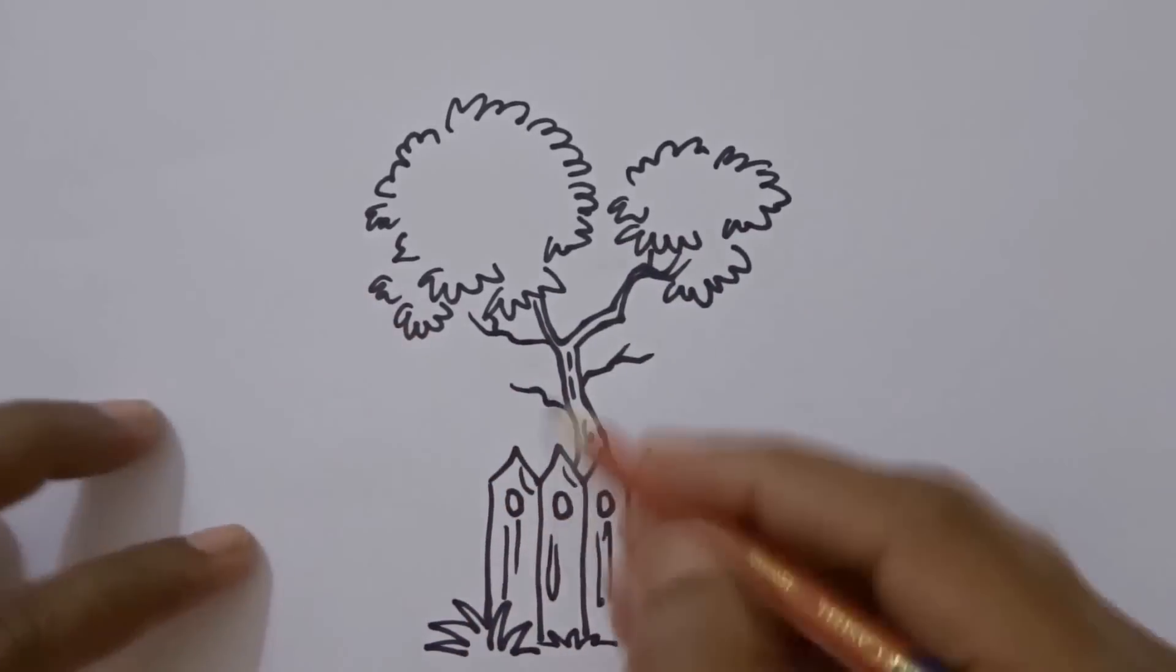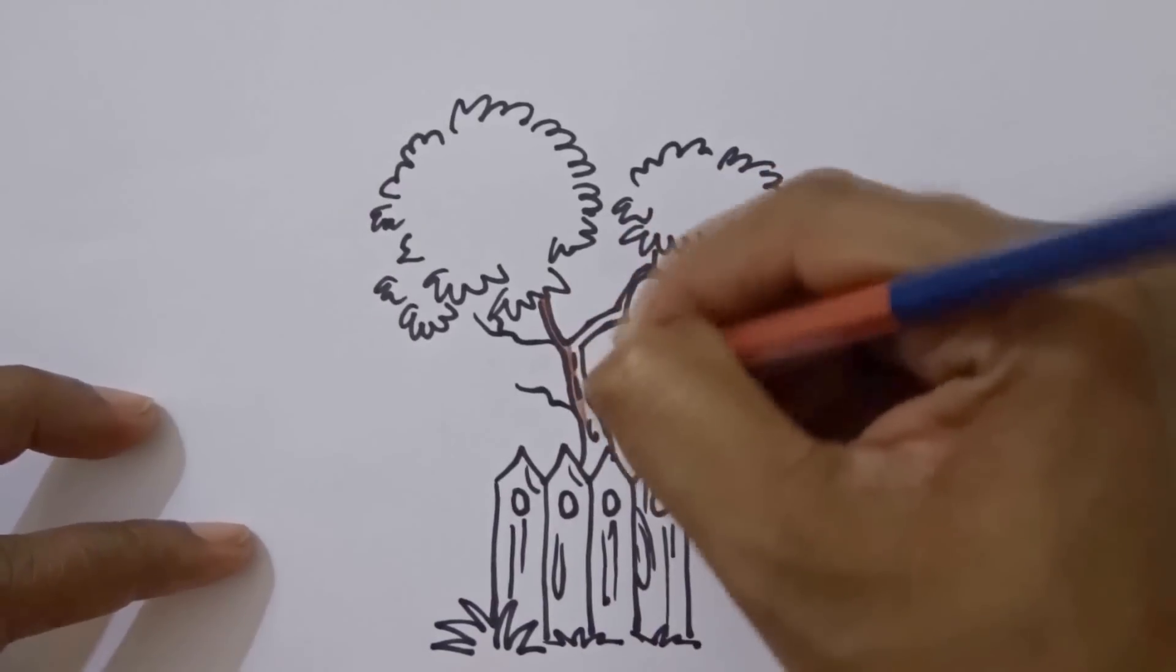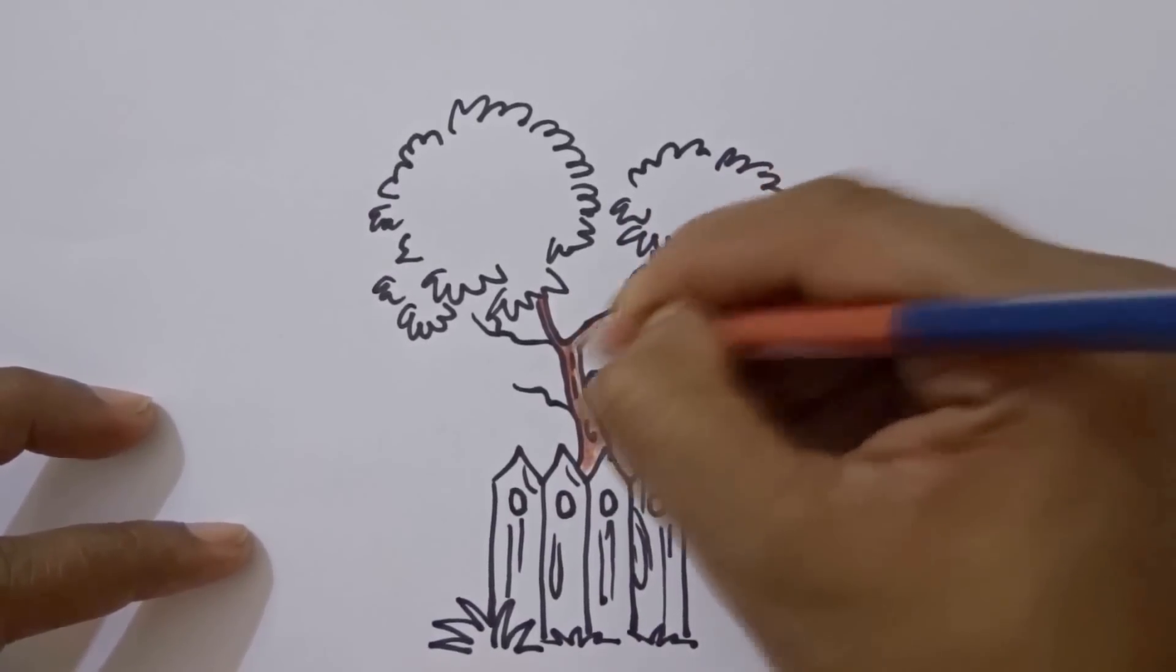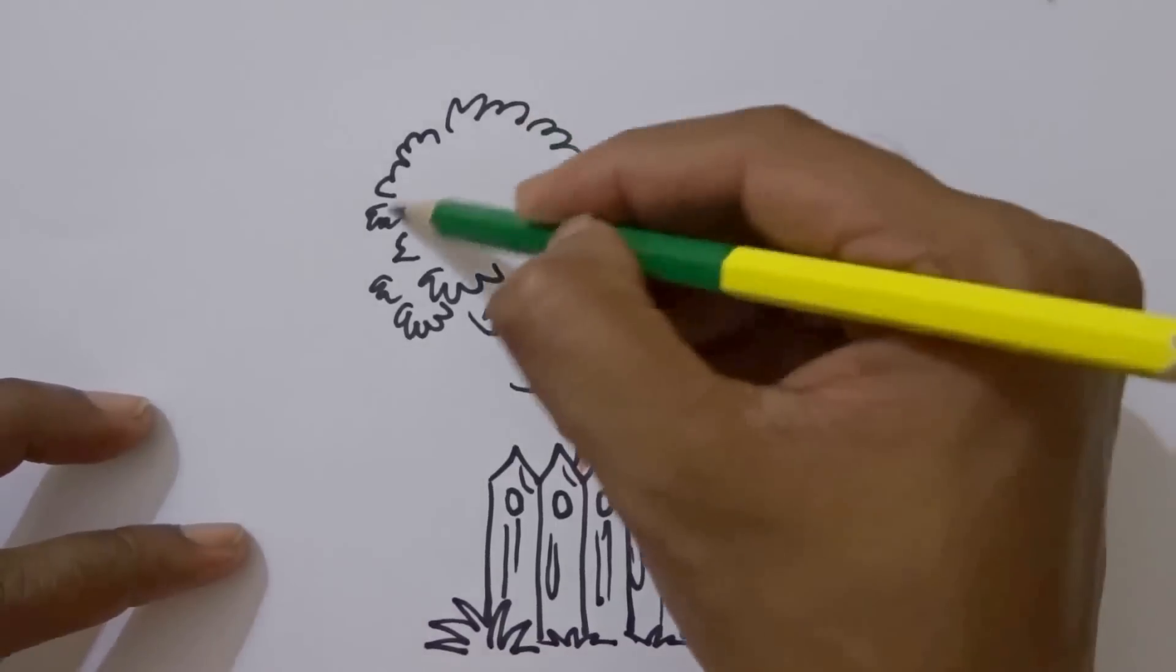Now with brown color, we will color the trunk. Take cobalt green and color the leaves.